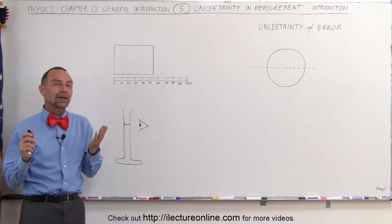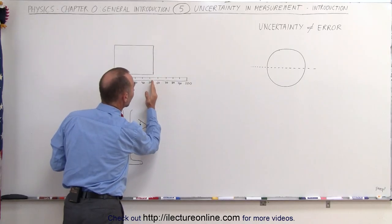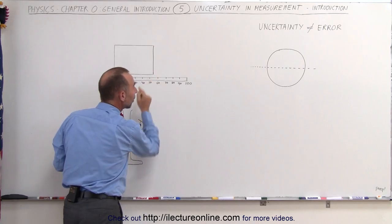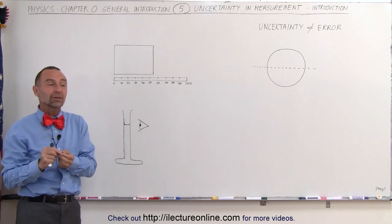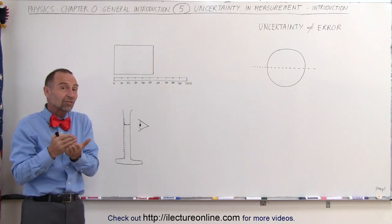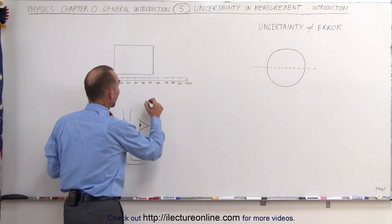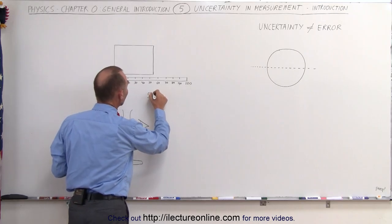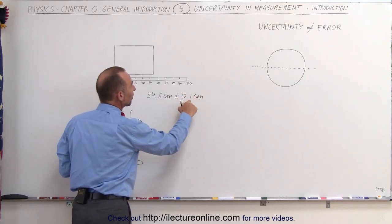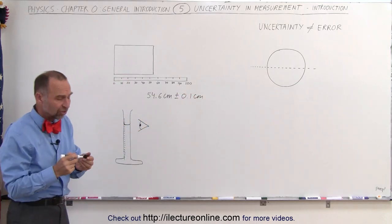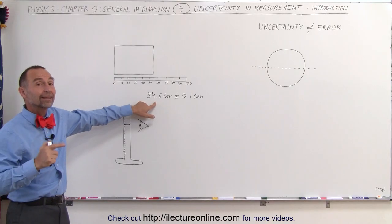Now, uncertainty is sometimes very poorly understood. Most of the time, people will look at this number right here and think, okay, whatever the smallest graduation is, let's say I have a meter stick, and the meter stick has graduations down to the nearest millimeter. Whatever the smallest graduation is on the scale, they will then say, well, the uncertainty is plus or minus that smallest graduation. For example, they will write down, well, it looks like it's 54.6 centimeters, plus or minus 0.1 centimeter, because that's the smallest graduation on the meter stick. But there's a lot of other reasons why you may not be very certain about the accuracy of this number.